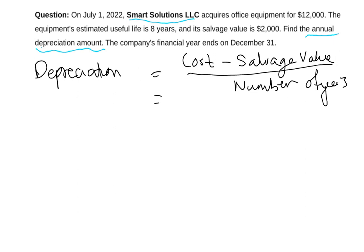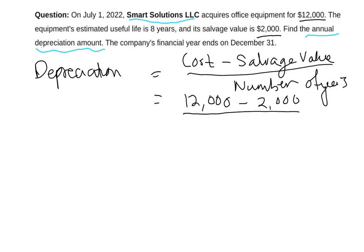The cost in this case is $12,000 — that's what we acquired it for. The salvage value is $2,000, which is how much we expect to sell it for after the eight years. The useful life is eight years. So: $12,000 minus $2,000 equals $10,000, divided by eight years, gives us $1,250 — that is our annual depreciation amount.